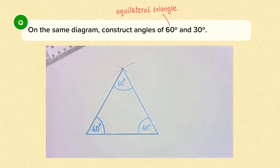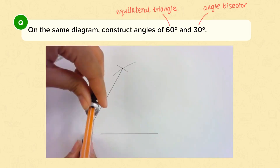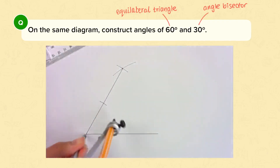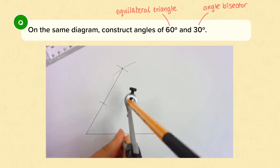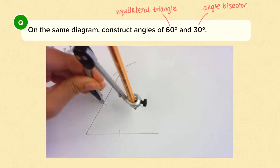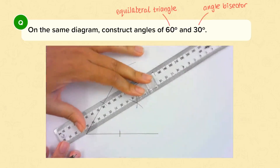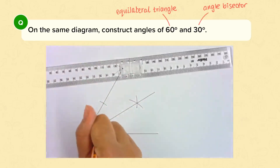Now that we've got our angle of 60 degrees, we can use an angle bisector to cut it in half and make two angles of 30 degrees. Start with the point of your compass on the point of the angle and draw two arcs — remember not to adjust the distance of your pencil at any point. Then, using those two points where your arcs meet your lines, draw two more arcs. Where those arcs meet, connect that point to the vertex. You now have two angles of 30 degrees making a larger angle of 60 degrees.